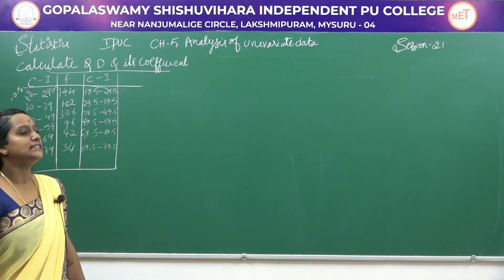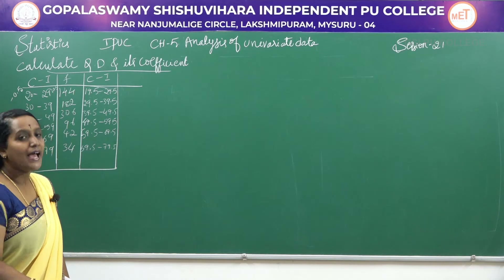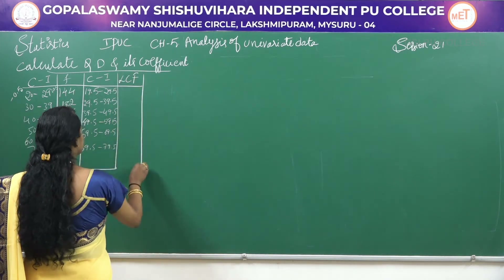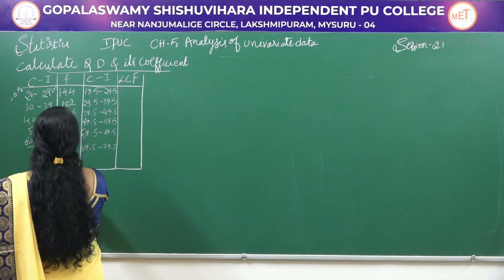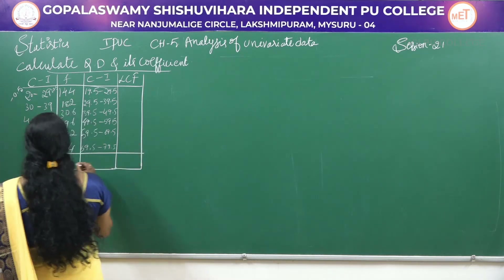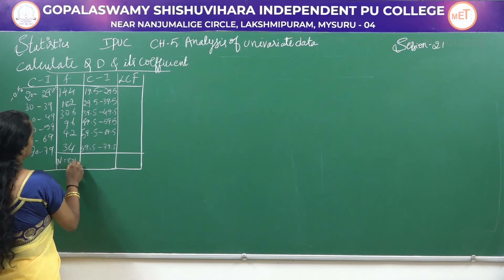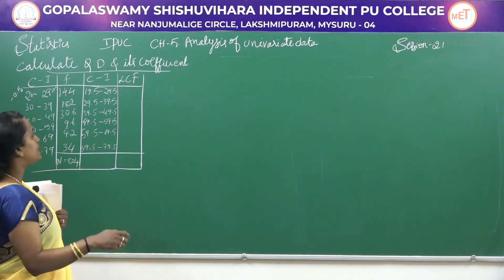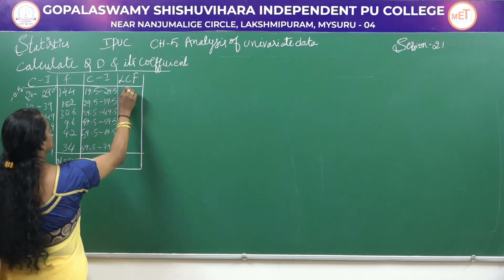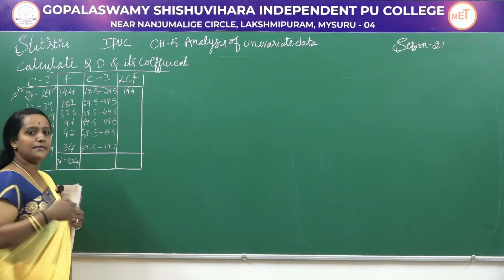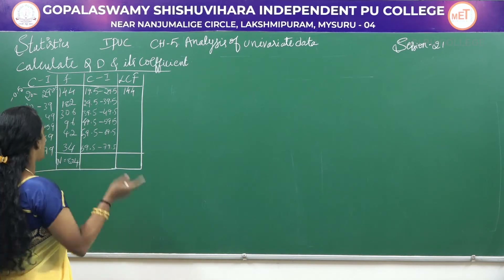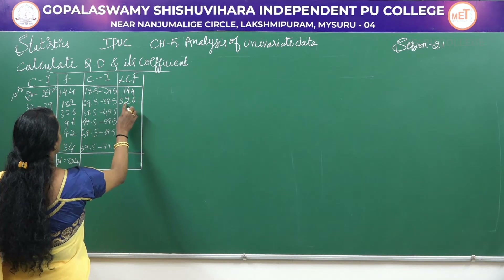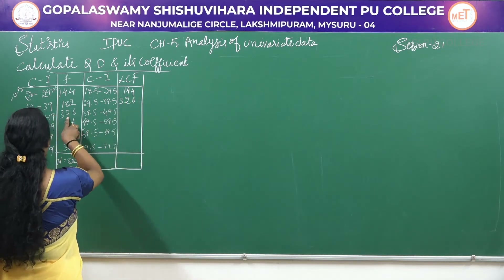This is our new class interval. The next step is we have to find the LCF, that is lower cumulative frequency. Your capital N value is 804 — the total of this is 804. To find LCF, the first frequency will remain same that is 144. For that 144 again we will add the next frequency that is 182, it is 326.